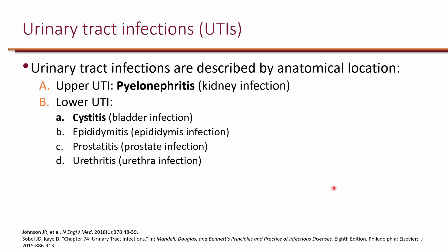In general, urinary tract infections are divided into two categories: upper urinary tract infections, which is primarily pyelonephritis — the infection of the kidneys — and lower urinary tract infections, which include cystitis, epididymitis, prostatitis, and urethritis. The bottom three are specifically in men, while cystitis can happen in both men and women.